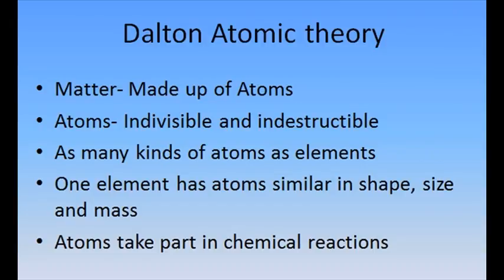Following are the main points of Dalton atomic theory. One: All substances are made up of extremely small particles known as atoms. Two: Atoms cannot be subdivided, created, or destroyed. Three: Atoms of a given element are identical in size, mass, and other properties. Four: Atoms can take part in chemical reactions. Five: Atoms of different elements combine in simple whole number ratios to form chemical compounds.